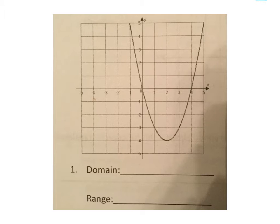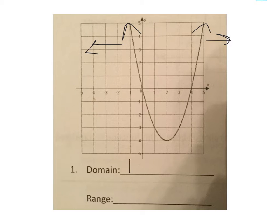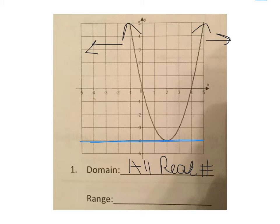Number 1 — you can see the picture on the video. We'll start with domain. Domain is the side-to-side distance. This parabola keeps going up but it's also slowly moving in both directions, so it's going side-to-side forever, which means the domain is all real numbers. For the range, the smallest y-value it touches is negative 4 and it goes up forever, so y is greater than or equal to negative 4.